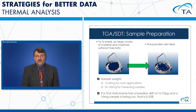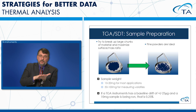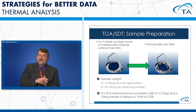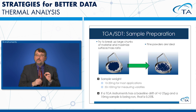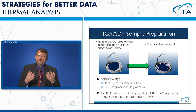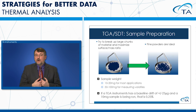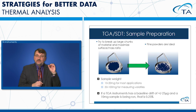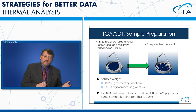For TGA sample preparation, the ideal sample is a powder spread evenly over the bottom of the pan. For large chunks or pellets, cut them into multiple small pieces and distribute them in the pan for better resolution. A typical sample weight of 10–20 mg works for most applications; larger samples of 50–100 mg are used when measuring very small volatiles. Always consider baseline drift: a 25-microgram drift on a 10 mg sample is 0.25%, but on a 1 mg sample it's 2.5%.